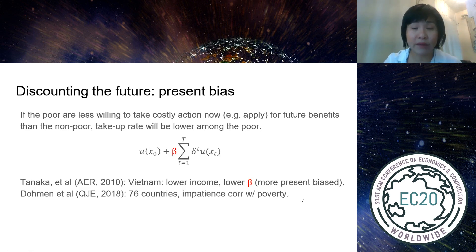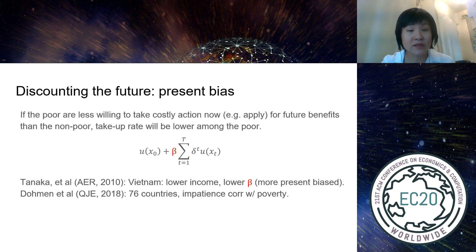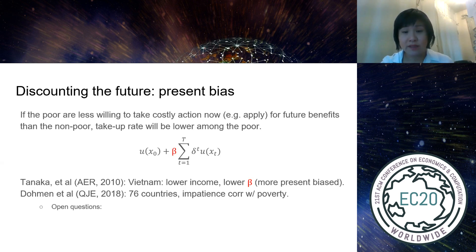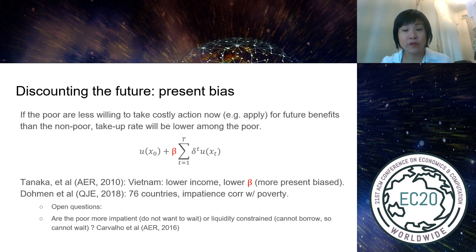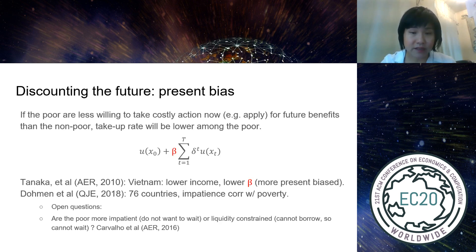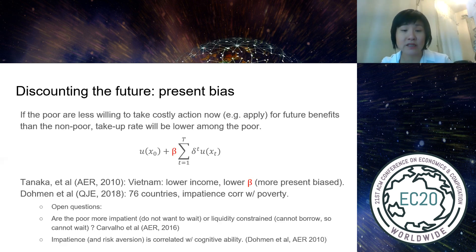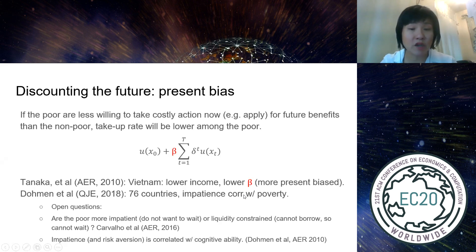There is evidence of a correlation between lower beta — being more present-biased — and lower income. A study by Tanaka et al. (2010) on families in Vietnam and a 76-country study in the QJE both show a correlation between impatience and poverty. Open questions remain: is it genuine impatience, or liquidity constraints — you can't borrow against the future so you must spend now? Additionally, Dollman's work shows cognitive ability is related to impatience, so if poverty affects cognition it may also affect impatience.